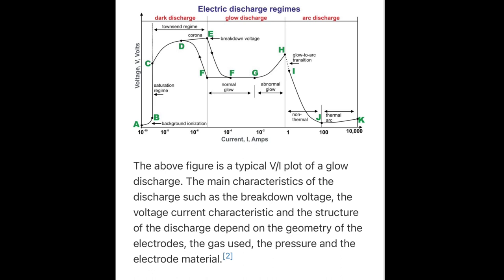Basic glow discharge structure. The voltage-current characteristic of a glow discharge is highly non-linear, as are many plasma phenomena, and ordinary linear physics cannot be applied to explain their structure. For a basic DC glow discharge, three main regions can be distinguished from each other: dark discharge, glow discharge, and arc discharge. This figure is a typical volts-over-amps plot of a glow discharge. The main characteristics of the discharge — such as the breakdown voltage, the voltage-current characteristic, and the structure — depend on the geometry of the electrodes, the gas used, the pressure, and the electrode material.